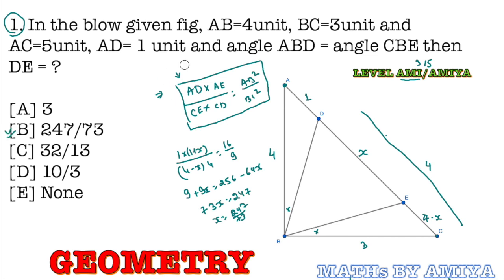That means the answer is option B. The answer is B with the help of the isogonal property. Now I am going to prove the isogonal property. Please make a note of this: this property is not only for a right angle triangle — though ABC is right-angled at B, there is no need for it to be a right angle. If two angles are the same, then AD·AE upon CE·CD equals AB² upon BC².